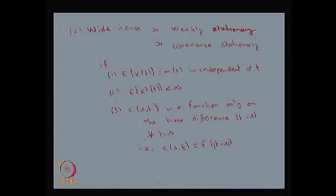If these three properties are satisfied by a stochastic process, then we say that process is wide sense, weakly, or covariance stationary. This is entirely different from strict sense stationary, where you find the joint distribution of n random variables, then find the joint distribution shifted by h, and if they are equal for all h greater than 0 and all n, it is strictly stationary.